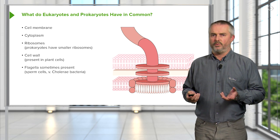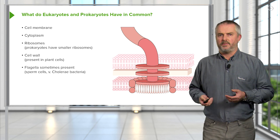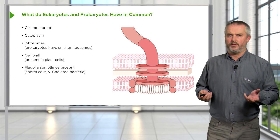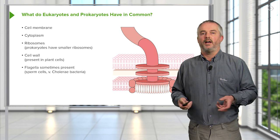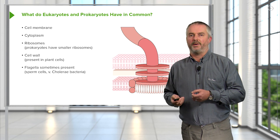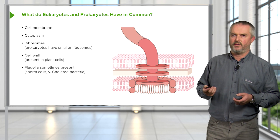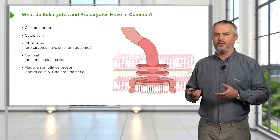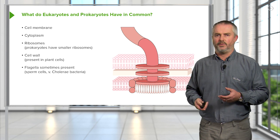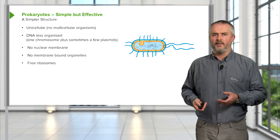Animal cells don't have a cell wall. Flagella is sometimes present in both cell types. For example, sperm cells have flagella, and some bacteria like the cholera bacterium need to swim — it lives in water and has a flagella so it can move. These motile bacteria move around by moving their flagella.